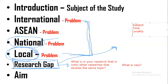Another research gap factor is the topic itself. Different topics mean different results. If your topic is truly unique and novel — meaning no related research can be found — that is a very novel kind of research. So research gap can come from differences in subject, time, locality, or topic.